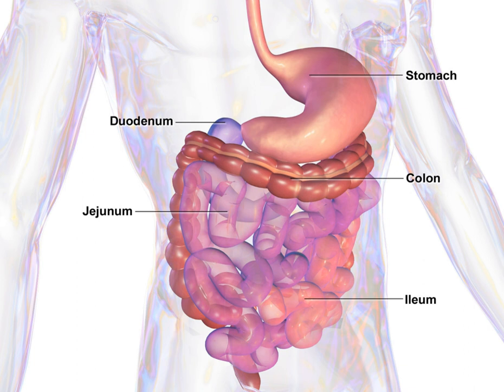The gastrointestinal tract has a form of general histology with some differences that reflect the specialization in functional anatomy. The GI tract can be divided into four concentric layers in the following order: mucosa, submucosa, muscular layer, and adventitia or serosa. The mucosa is the innermost layer of the gastrointestinal tract. The mucosa surrounds the lumen, or open space within the tube, and comes in direct contact with digested food.